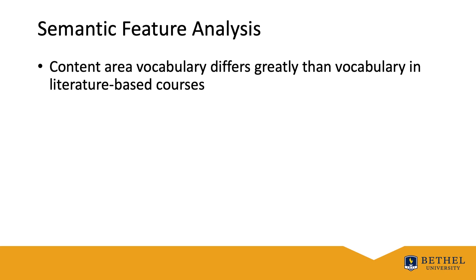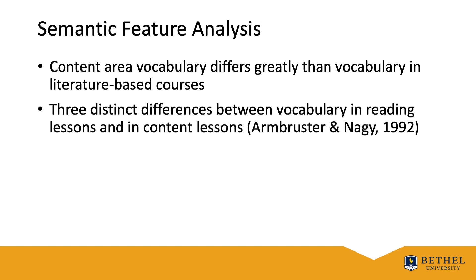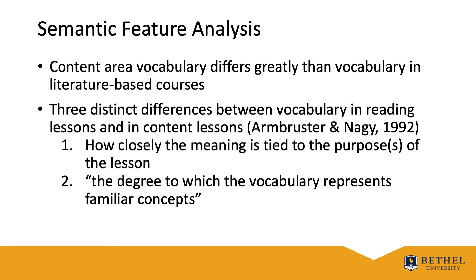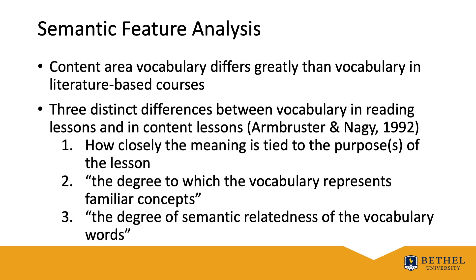Content-area vocabulary varies greatly from that of the vocabulary selected for instruction in literature-based courses. Armbruster and Nagin (1992) argued in favor of three distinct differences between vocabulary in reading lessons and those in content lessons: one is how closely the meaning is tied to the purpose of the lesson; the second is the degree to which the vocabulary represents familiar concepts; and the third is the degree of semantic relatedness of the vocabulary words.